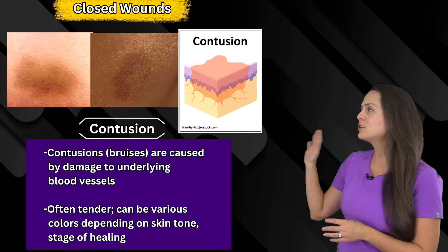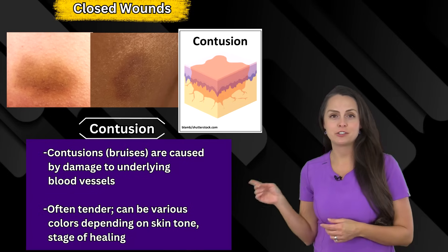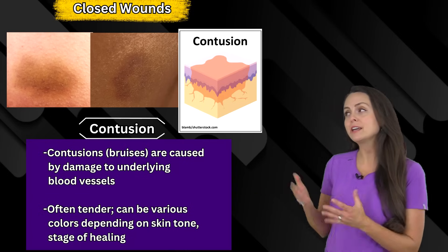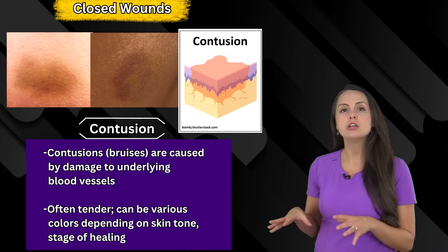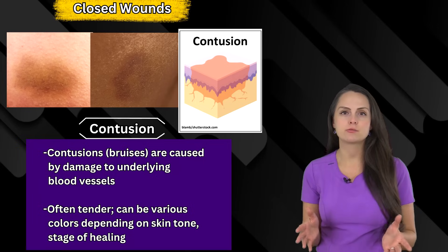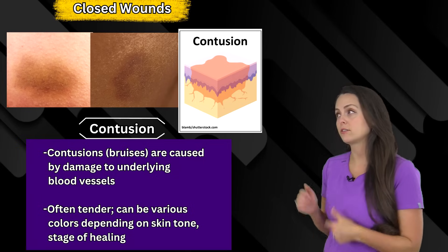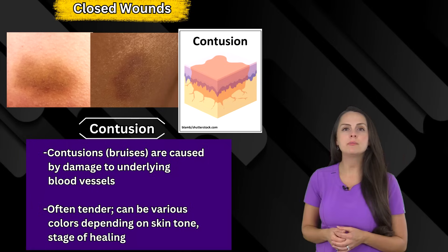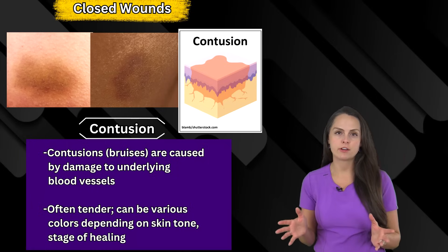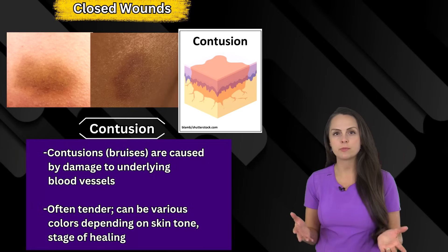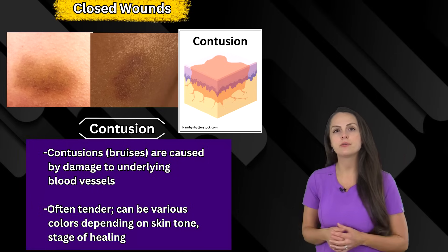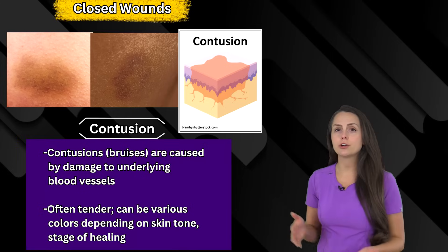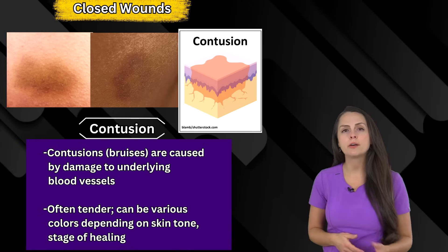First let's go over closed skin wounds. Here we have a contusion, also known as a bruise. It can occur whenever you have trauma to those underlying blood vessels, which causes discoloration of the skin. A contusion can be tender along with being a variety of colors, and the colors really depend on the person's skin tone and the stage of healing — so purplish, dark green, brown, or yellow.